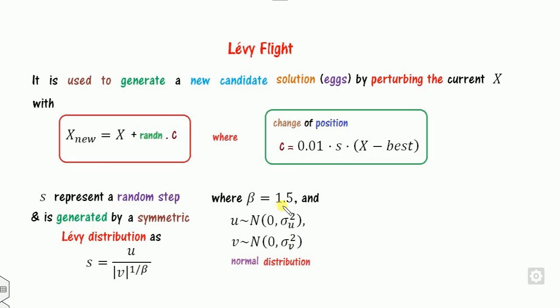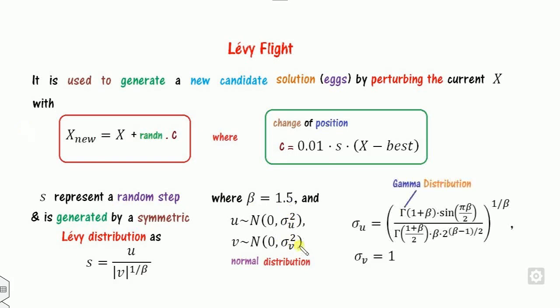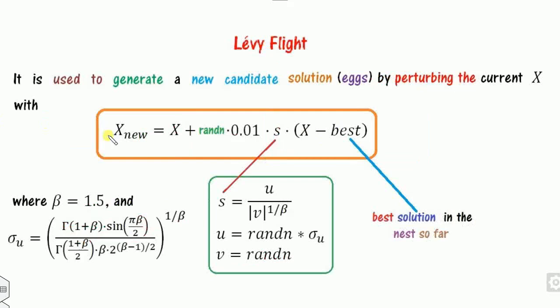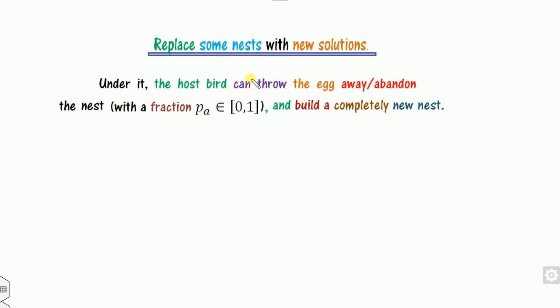The step size s is defined as u divided by |v|^(1/beta), where beta is most generally set to 1.5. u and v are normally distributed with mean zero and variances sigma_u squared and sigma_v squared respectively. Sigma_u is defined using the gamma function. In the Lévy flight, substituting c gives x_new = x + 0.01 * s * (x - x_best), where x_best is the global best solution found so far. This completes the first phase of the cuckoo search.